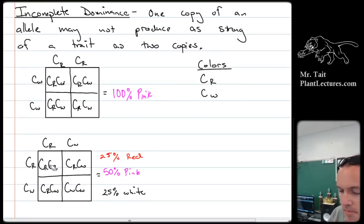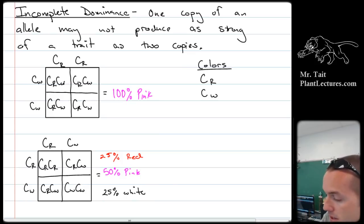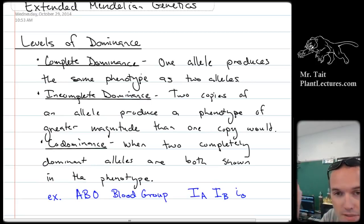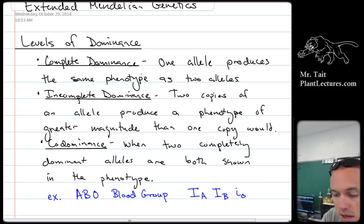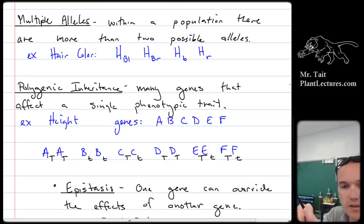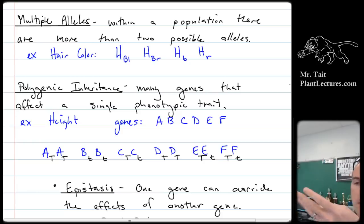We said we could use Punnett squares to determine percentages of offspring likely to be produced, and there are all kinds of different interactions. For dominance: complete dominance means the homozygous dominant individual has the exact same phenotype as the heterozygote. Incomplete dominance is where the homozygous dominant has a more extreme phenotype than the heterozygote. Codominance is where both alleles get shown if the organism is heterozygous. There are also multiple alleles, meaning there are more than two options for alleles — like hair color could be brown, black, blonde, or red.